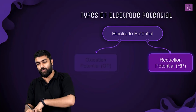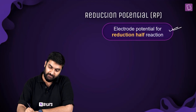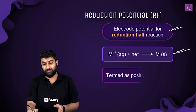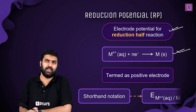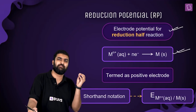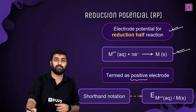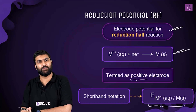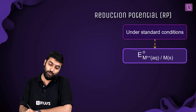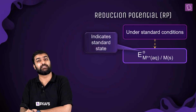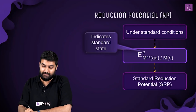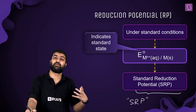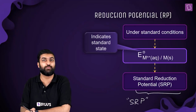Now let's move to reduction potential. The reduction half-reaction is the opposite of the oxidation reaction, and this electrode can be termed the positive electrode in a galvanic cell — but come to the charge as a conclusion, don't just remember it. Under standard conditions, we again add the 'not' symbol, indicating the standard state.